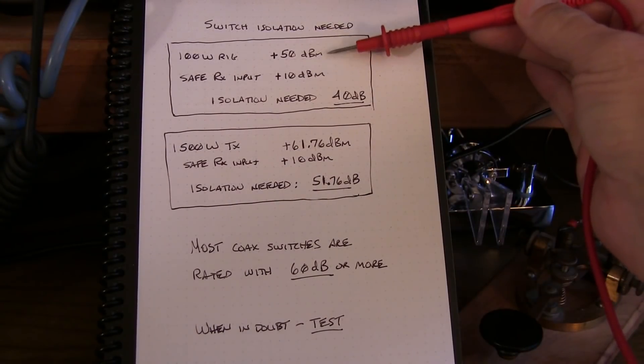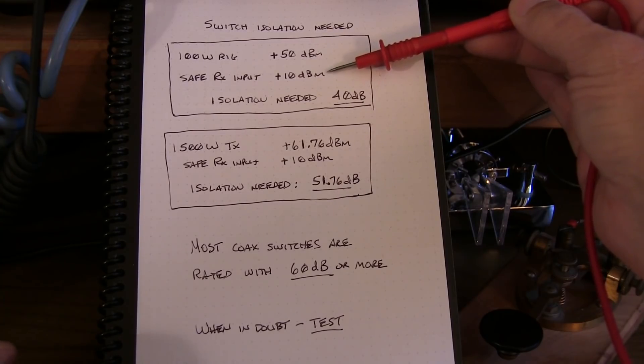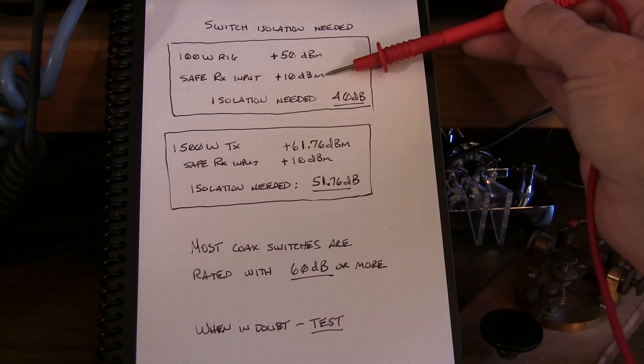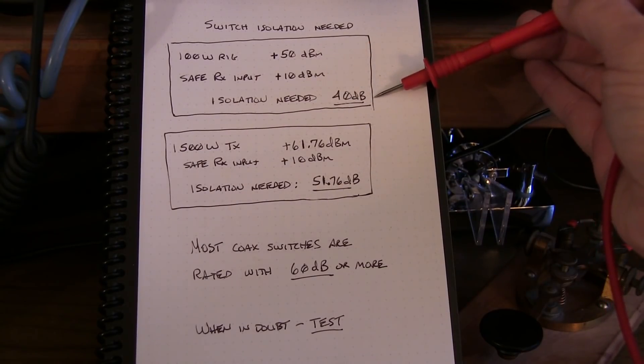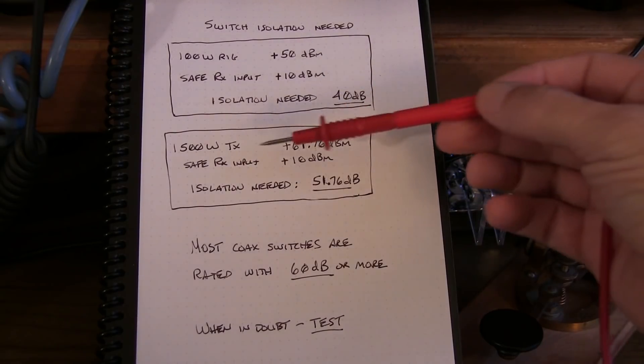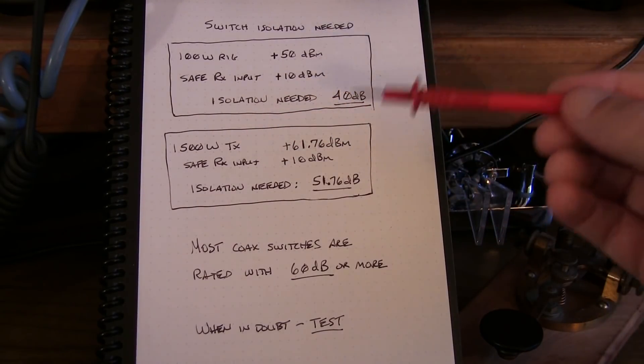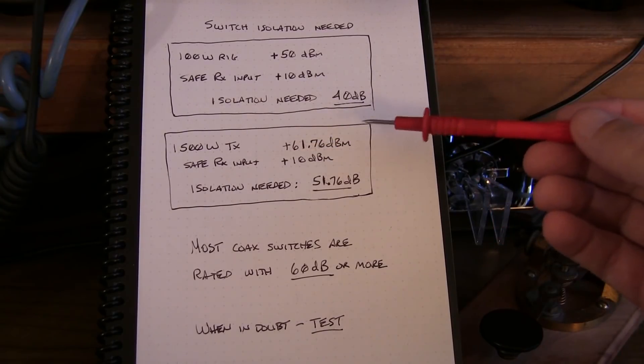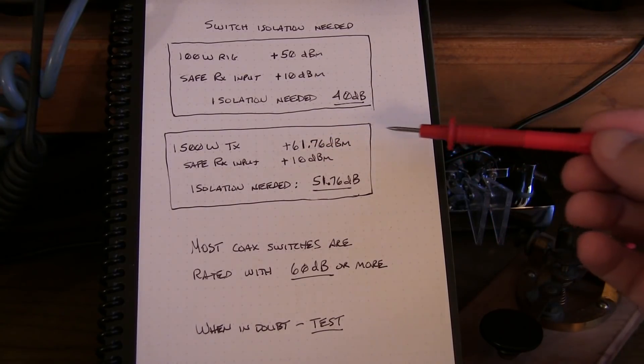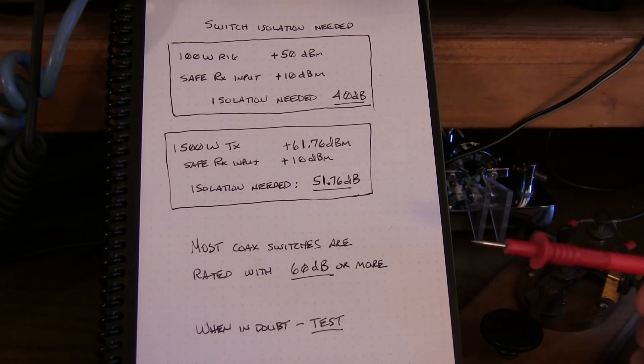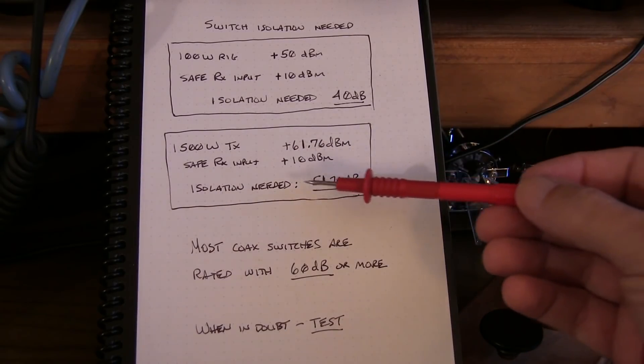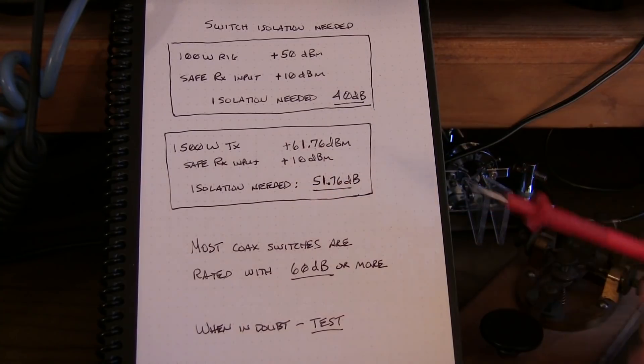So let's say I'm going to have a 100 watt rig on the switch and the safe input power to the rig that's being switched out of line is plus 10 dBm. That tells me the isolation needed by the switch is 40 dB. And even in the case of I'm running legal limit 1500 watts, that's plus 61.76 dBm or about plus 62 dBm. And again, that safe input power of plus 10 dBm says that the switch needs to give me at least 51.76 dB of isolation.